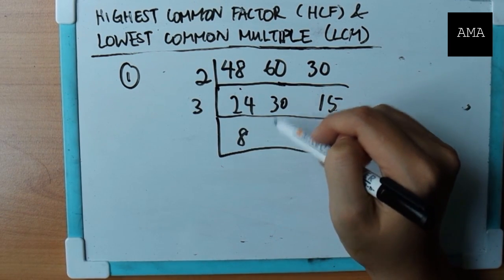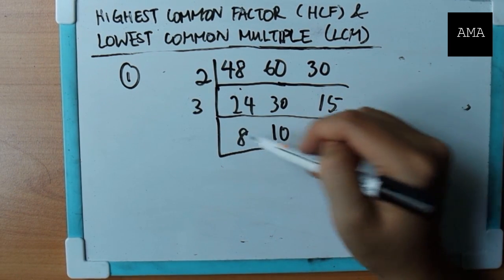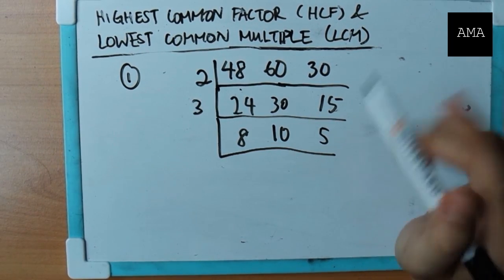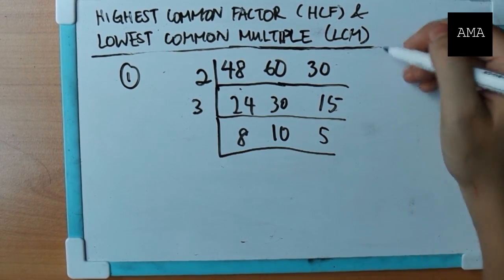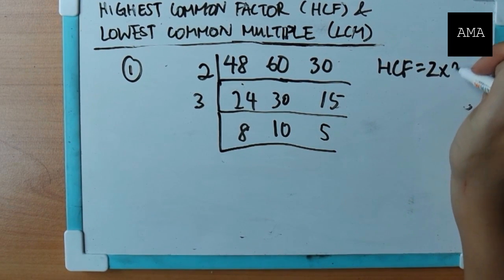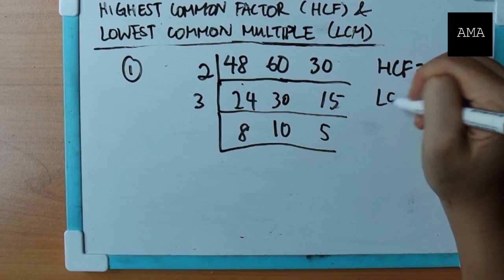Eight, and then this is ten, five. At this stage, there's no longer a common factor between these three numbers, right? Amongst these three numbers. So HCF, I'm done. Easy. It's just two times three. That's six.